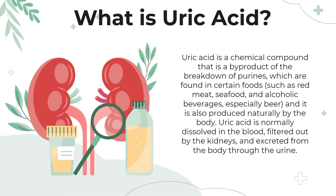So what is uric acid? Uric acid is a chemical compound that is a by-product of the breakdown of purines, which are found in certain foods such as red meat, seafood, and alcoholic beverages, especially beer. It is also produced naturally by the body itself. Uric acid is normally dissolved in the blood, filtered out by the kidneys, and excreted from the body through the urine.